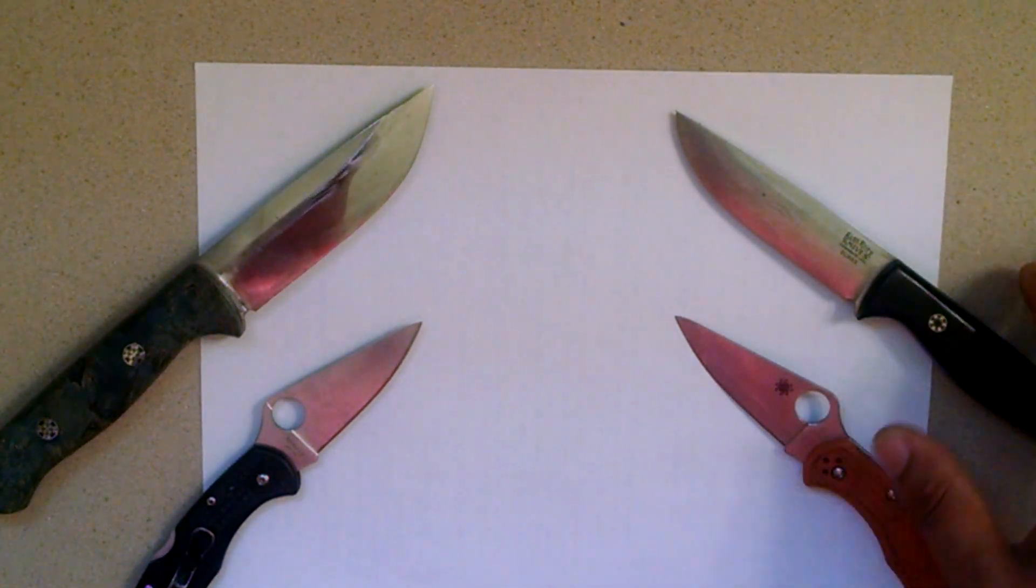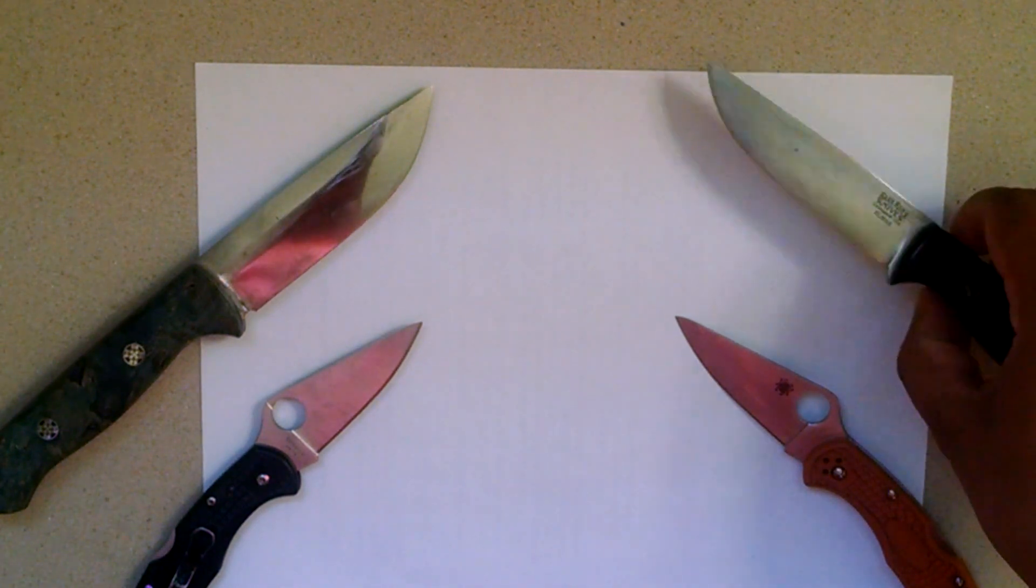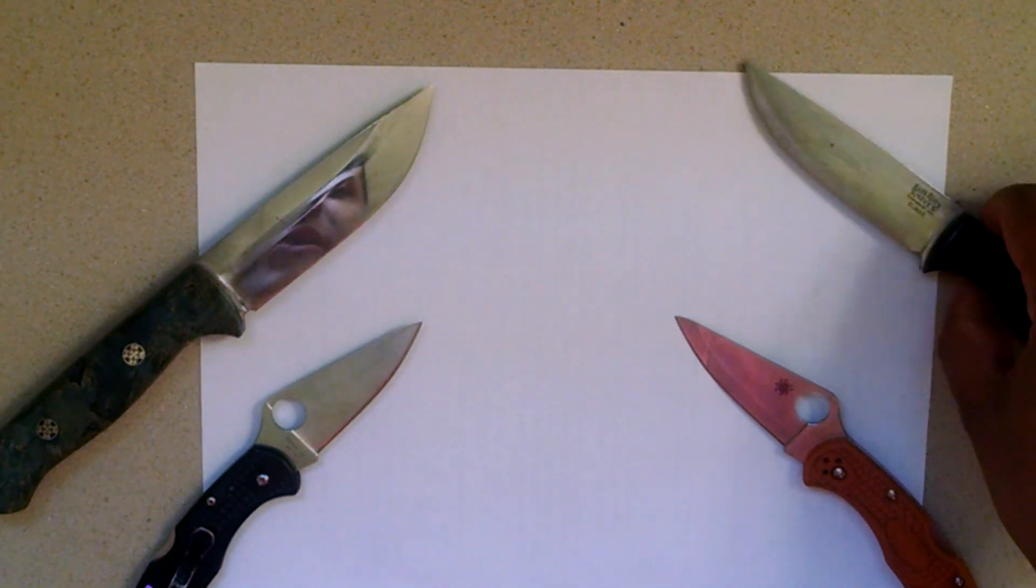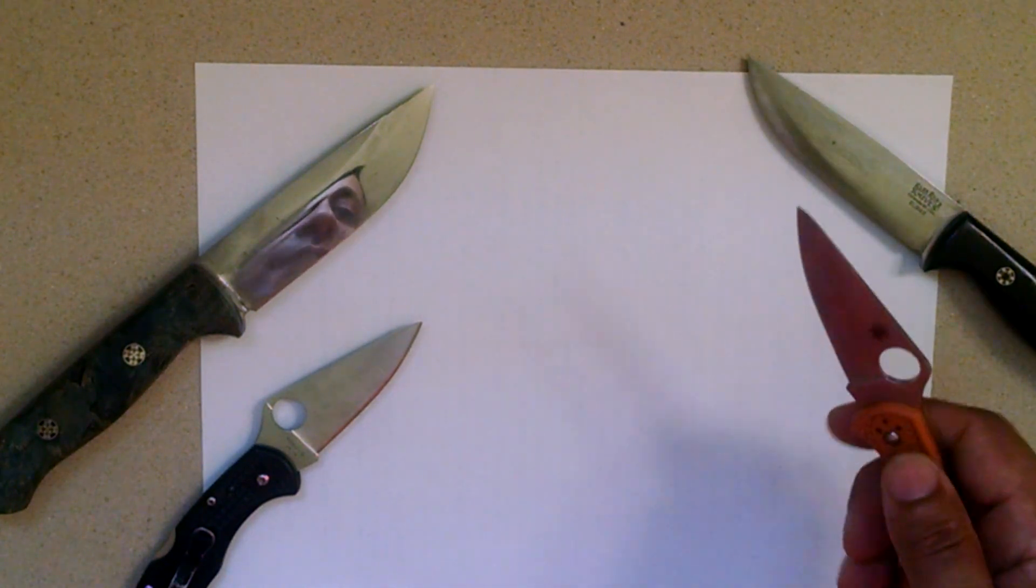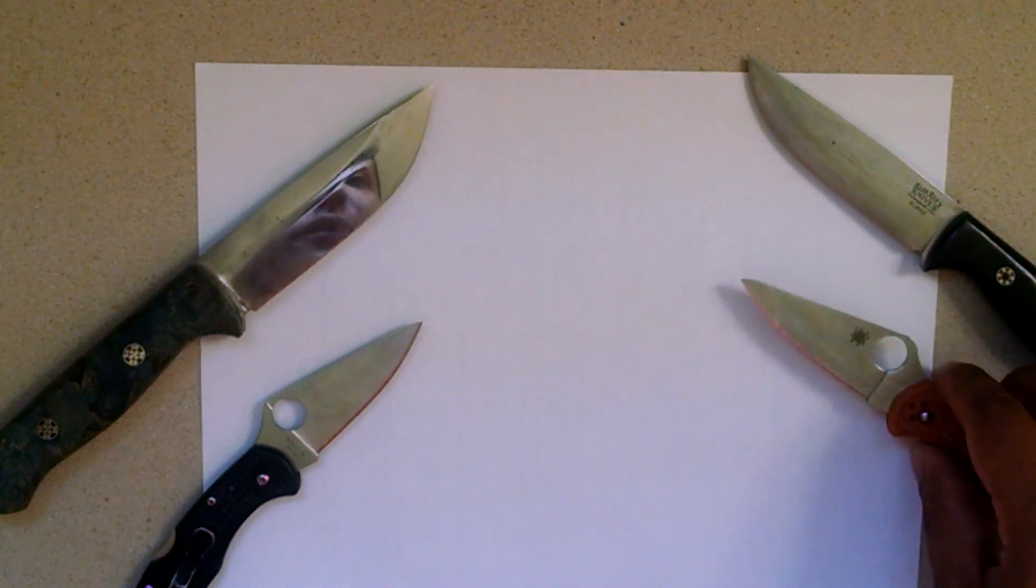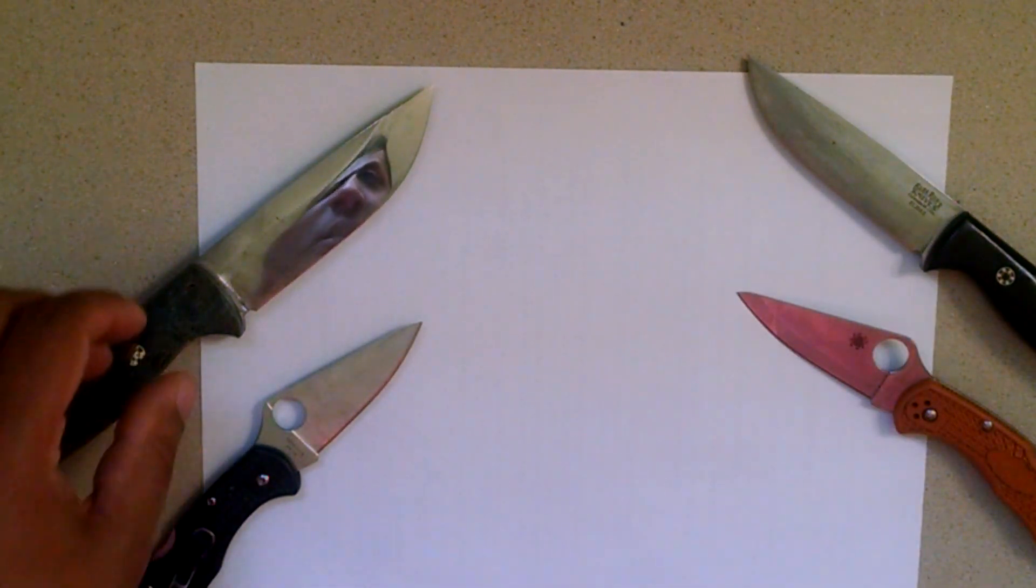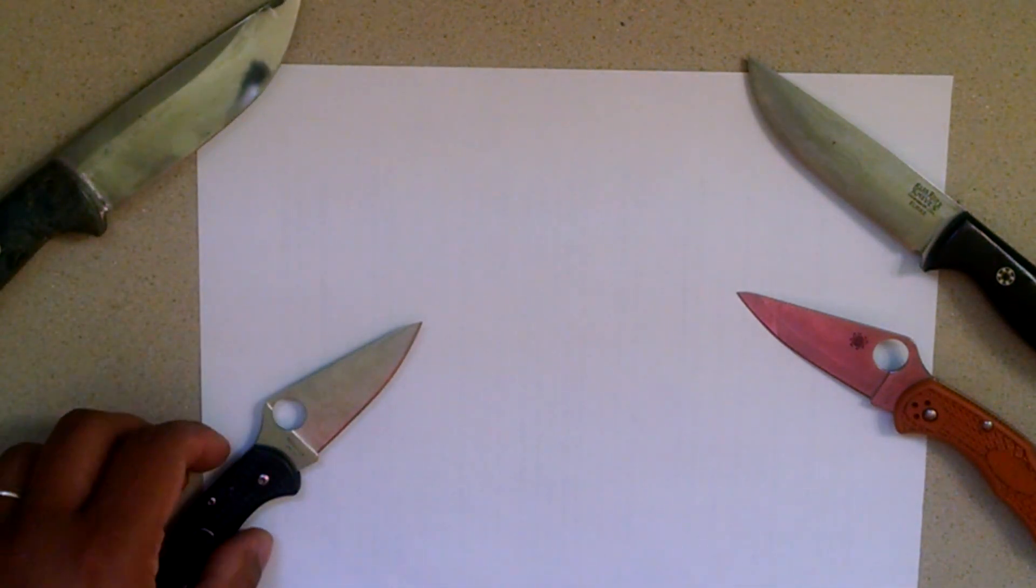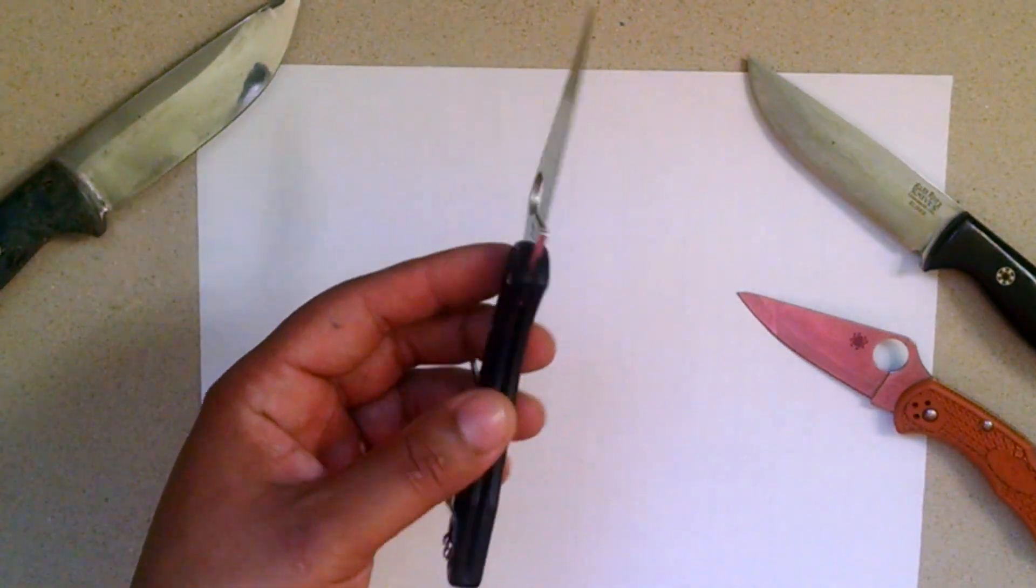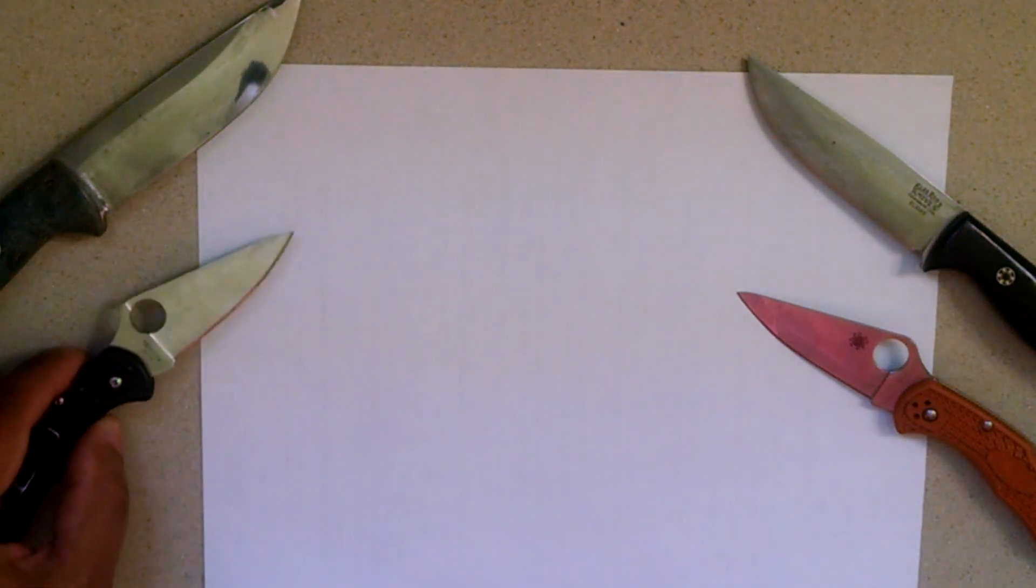So here on my right we have the fancy powdered steels. This is an ELMAX right here, Bark River Gunny. This is a HAP-40, Japanese version basically of M4 Rex. Over here we have A2, Bark River Bravo 1, and just your standard VG10 Delica right here.